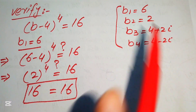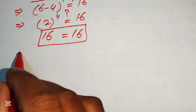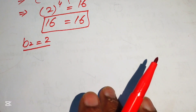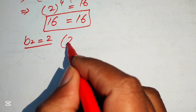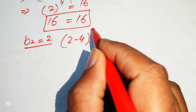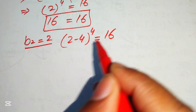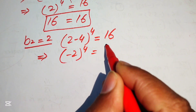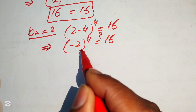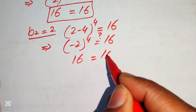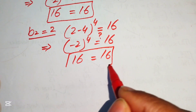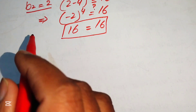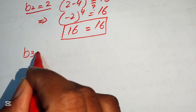For b2 equals 2: substituting gives (2 minus 4) to the power 4, which is (minus 2) to the power 4 equals 16. We check: (minus 2) to the power 4 equals 16, and 16 equals 16. The second value of b also satisfies the equation.